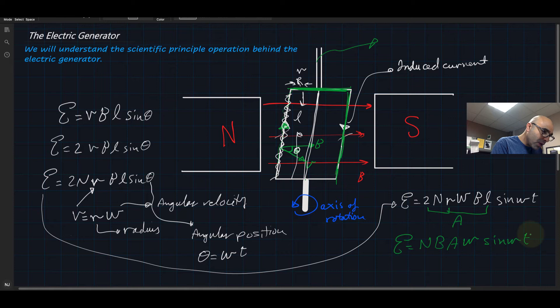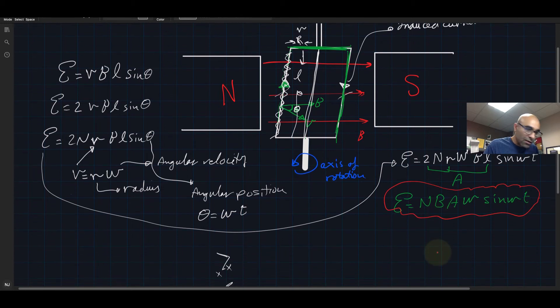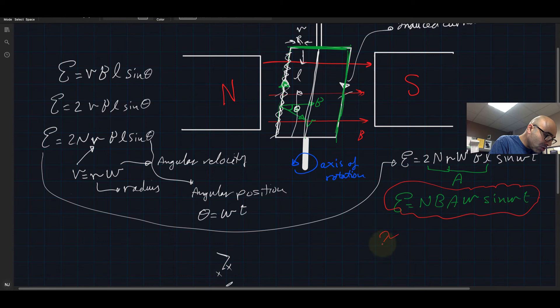So after rearranging and putting 2r times L equals to the area, we get this nice equation for the electric generator. That's it for the electric generator. For the electric motor it was NBA I sine phi. Let me actually put them all together. So that's for the torque. For the electric motor, torque is equal to NBA I sine phi. Phi is the torque angle as we mentioned.